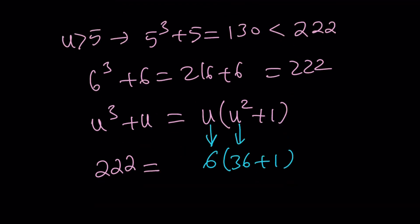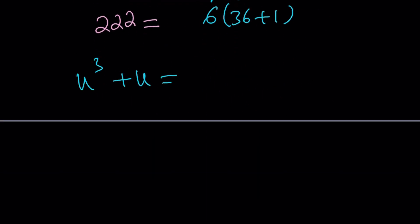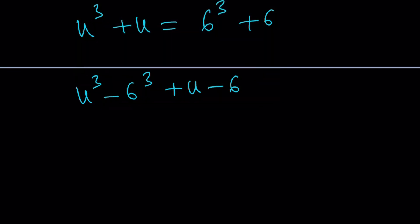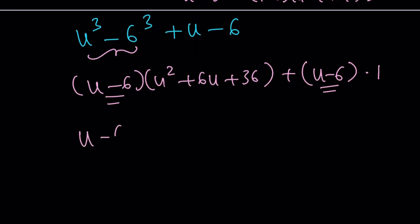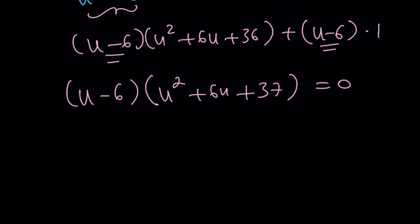But u equals 6 works. Let's write u cubed plus u as 6 cubed plus 6, put everything on the left-hand side and factor. So we're going to be using difference of 2 cubes. And hopefully you remember the formula a cubed minus b cubed is a minus b times a squared plus ab plus b squared. This is going to become u minus 6 multiplied by u squared plus 6u plus 36. This is u minus 6 times 1. If you take out this as a common factor, u minus 6, we already know u equals 6 is a solution. The other factor is going to be u squared plus 6u plus 37. So we got it factored.